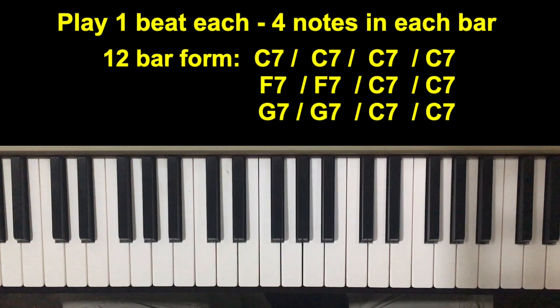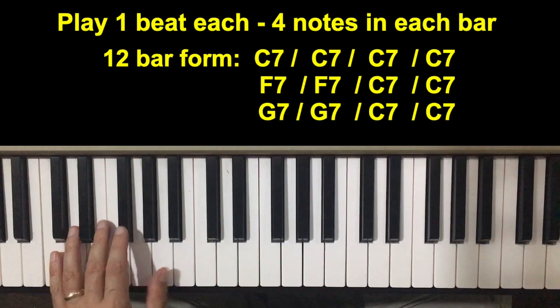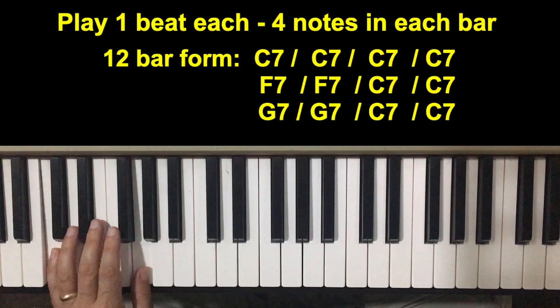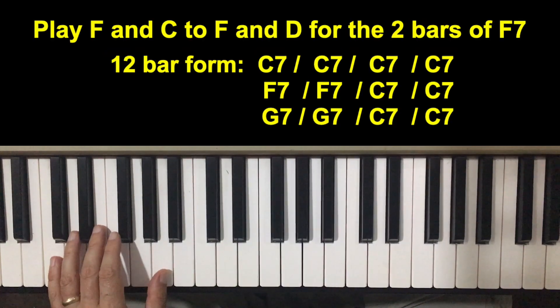Now, to play the blues, we have to follow the 12-bar blues form. It's four bars of C. One, two, two, three, four. Three, two, three, four. Four, two, three, four. At this point,